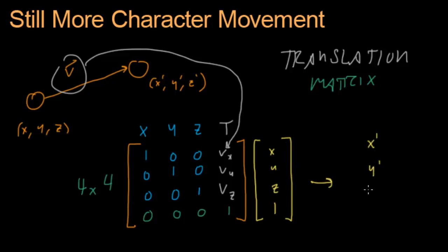This vector gets translated, and the result is going to be x prime, y prime, z prime, 1. I've got to stick this 1 down here just because we need a 4x1 vector, so we put a 1 down here just to fill in that space.